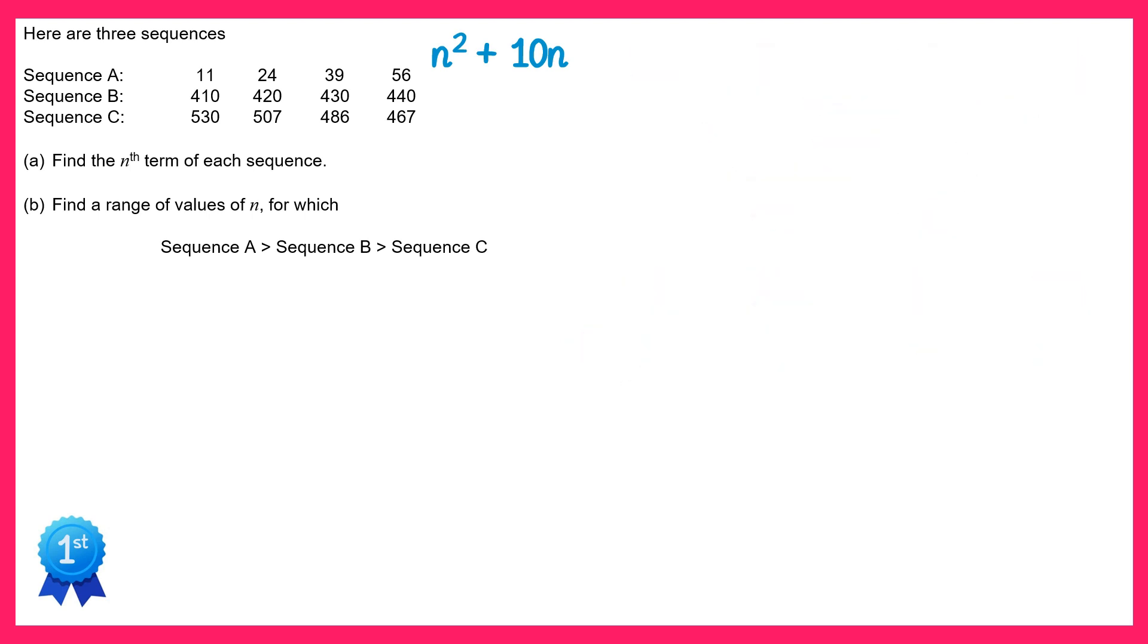Now let's look at sequence B. So sequence B goes like this, and if you do the common differences, you'll see it always goes up in 10. This means we have a linear sequence of the form 10n, and since it starts at 410 rather than 10, we need to add 400. So the nth term of this one is 10n plus 400.